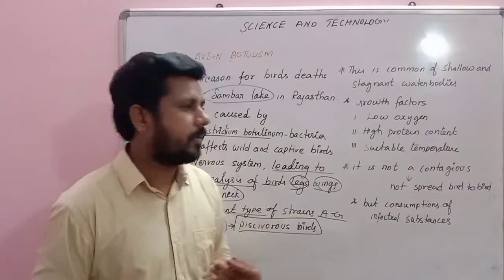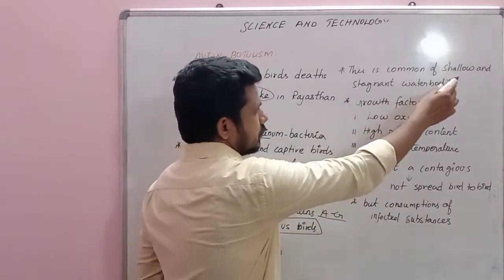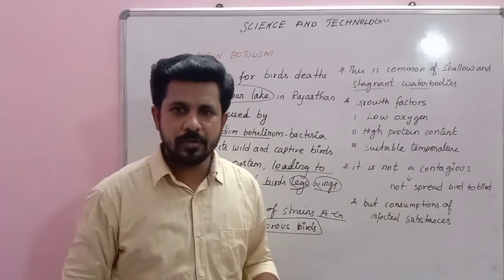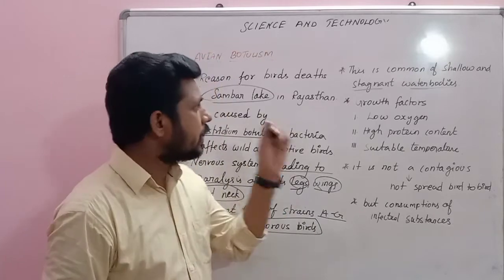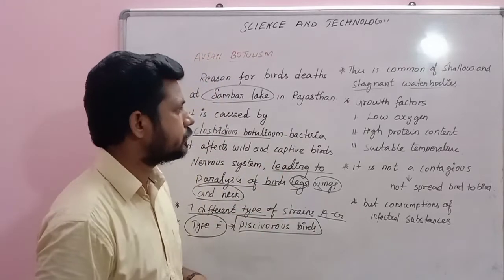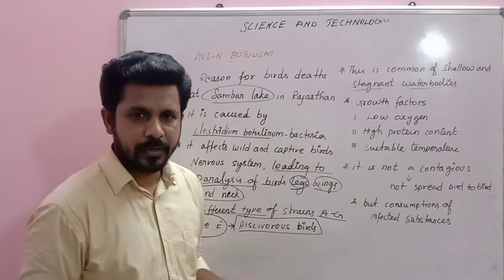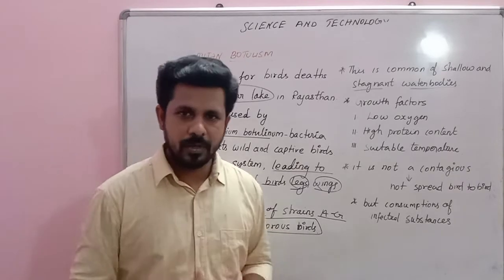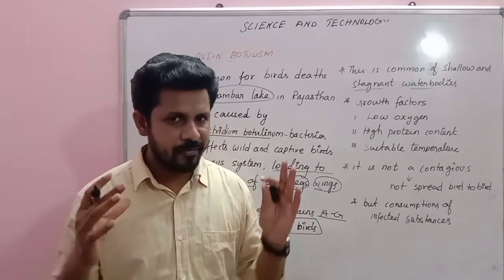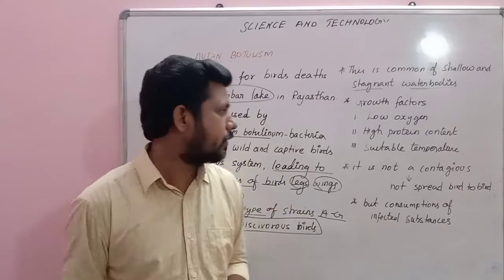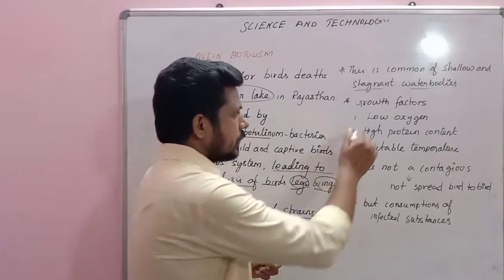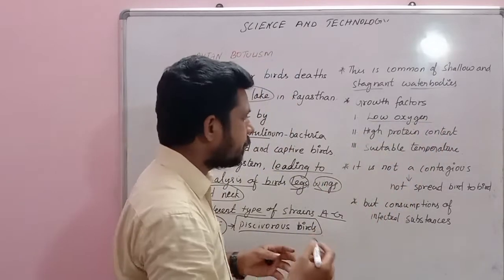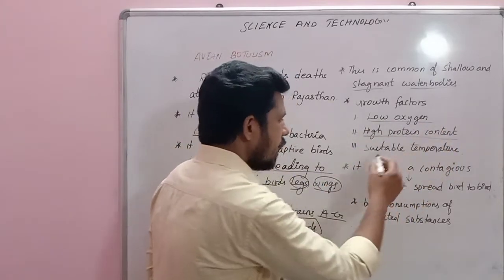The Type E strain is common in shallow and stagnant water bodies, like river silt or sea water silt. The bacteria's growth factors include low oxygen availability, high protein content, and suitable temperature — these are the conditions under which this bacteria can easily grow.